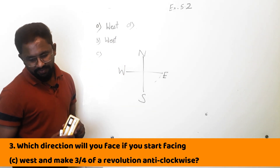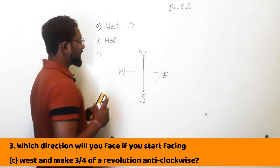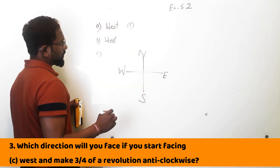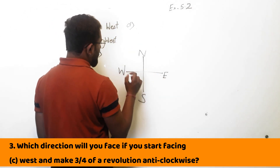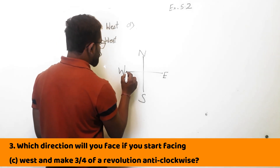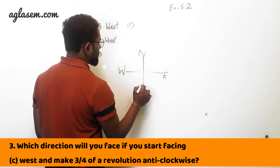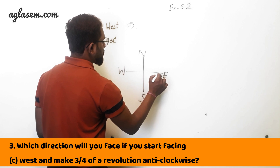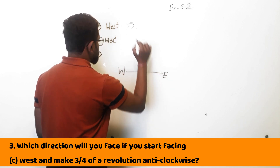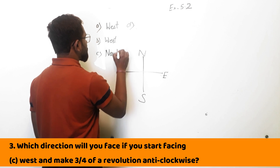West and making 3 by 4 of the revolution anti-clockwise. Going anti-clockwise 3 by 4 from west — 1 by 4, 1 by 2, 3 by 4 — so you will be facing north.